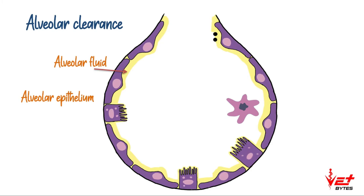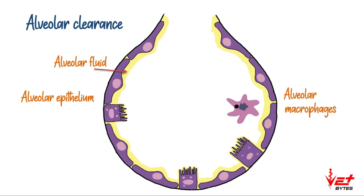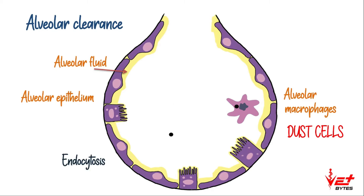Certain inhaled particles can dissolve in the alveolar fluid. Certain particles can join with the alveolar fluid, be transported to the tracheobronchus, and excreted along with the moving mucus blanket. Certain particles can also be phagocytosed by macrophages called alveolar macrophages. These macrophages are always found with dust particles, so they are also called dust cells. Some particles can be taken up by epithelial cells through endocytosis, after which the cells detach from the alveoli and are removed along with the mucus.